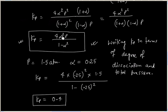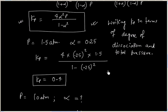Or if Kp and alpha are given, we can calculate P. There are three variables, so we can play with them to calculate one variable if two variables are given.